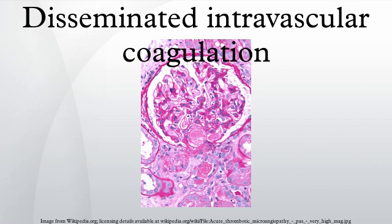Causes: DIC can occur in the following conditions — solid tumors and hematologic malignancies; obstetric complications including abruptio placentiae, preeclampsia or eclampsia, amniotic fluid embolism, retained intrauterine fetal demise, and septic abortion; massive tissue injury including severe trauma, burns, hypothermia, rhabdomyolysis, and extensive surgery.